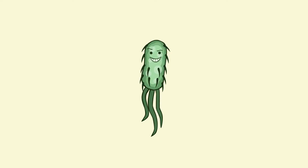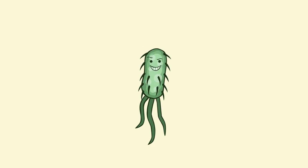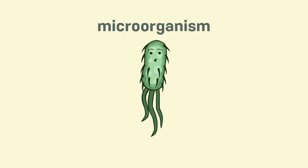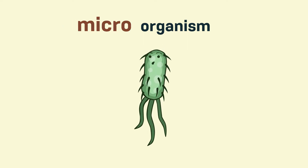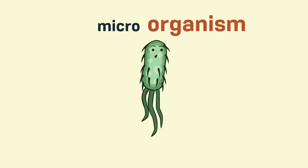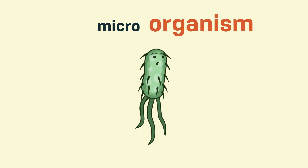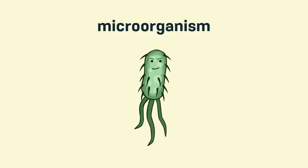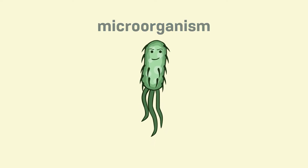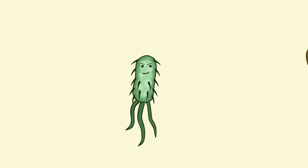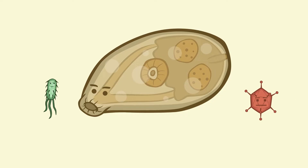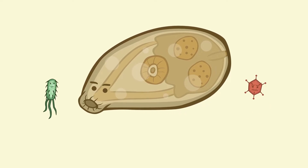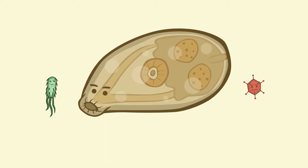A pathogen can be described as any microorganism that causes disease. What is a microorganism? Let's break down the word. Micro means extremely small — too small to be seen with the naked eye. And organism means living thing. So microorganisms are microscopic living things. Not all pathogens are microscopic, and not all are living. As a general rule of thumb, you can think of pathogens as really small things that can make you sick.